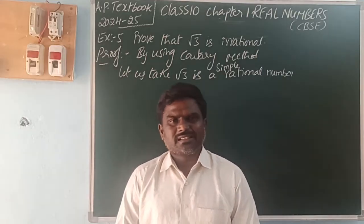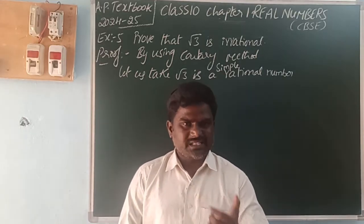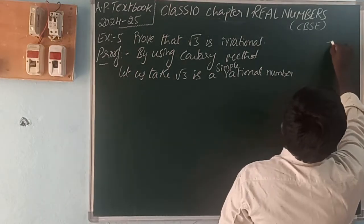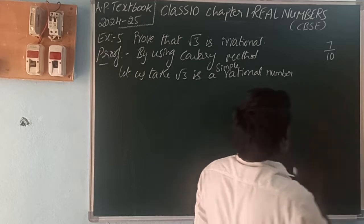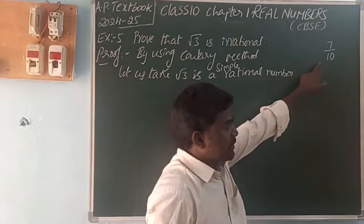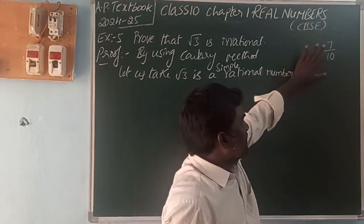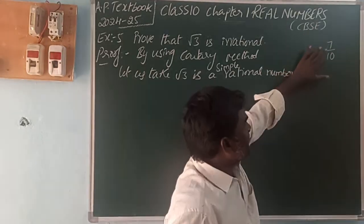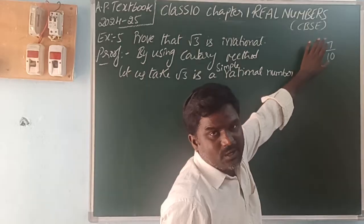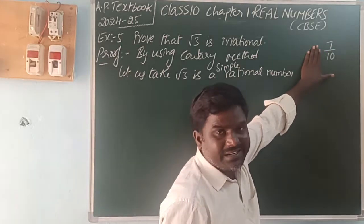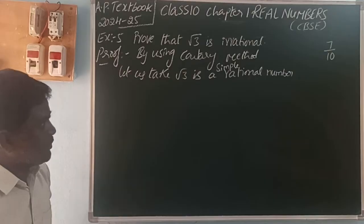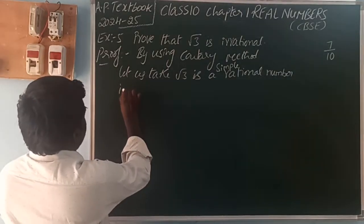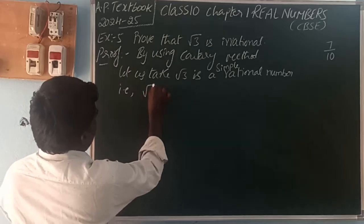For example, 7 by 10 is in the form p by q, q is not equal to zero. Seven and ten have no common factor except one, so seven and ten are called co-primes, and this number is called a simple rational number. Now let us assume root 3 is a simple rational number, so root 3 equals a by b.